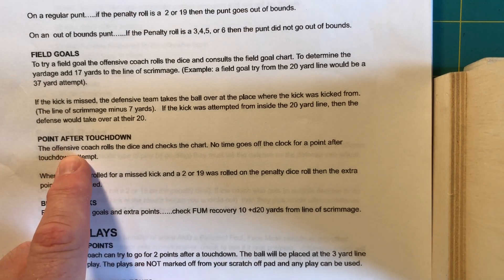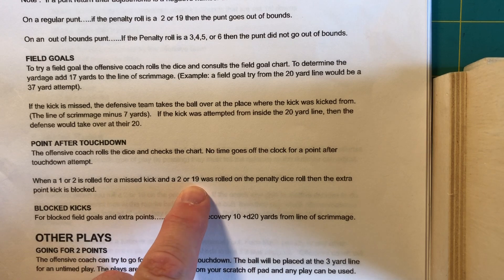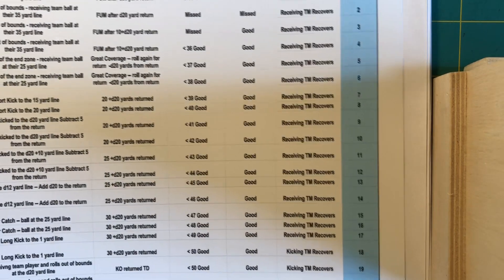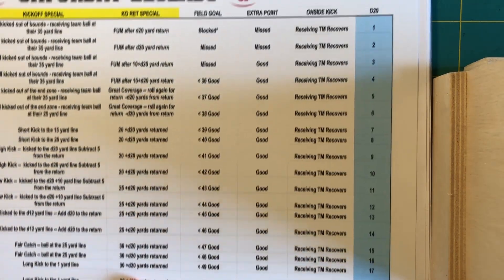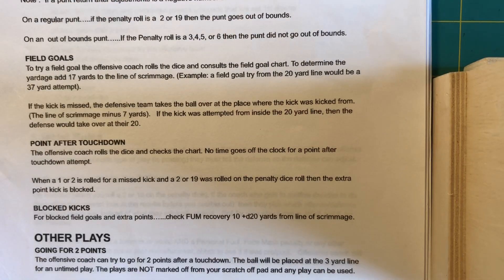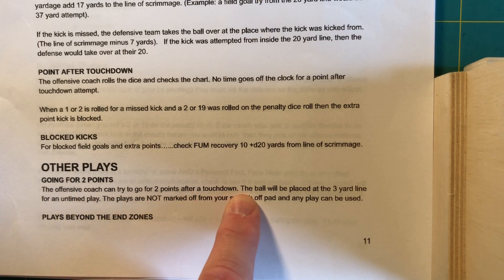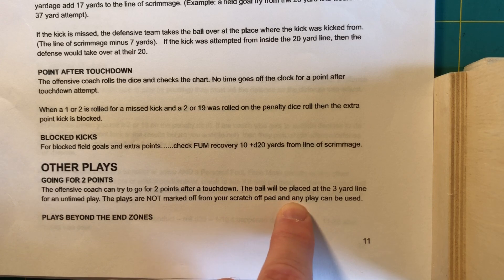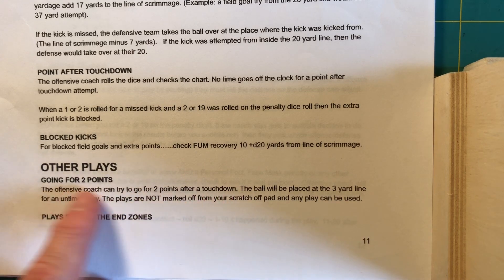Point after touchdown: the offensive coach rolls the dice and checks the chart. No time goes off the clock. When a 1 or 2 is rolled for a missed kick and a 2 or 19 was rolled on the penalty dice roll, then the extra point kick is blocked. I rolled an 8 — it's good. Going for 2 points: the offensive coach can go for 2 after a touchdown. The ball is placed at the 3-yard line for an untimed play. The plays are not marked off from your scratch-off pad, and any play can be used. You've got to make 3 yards.